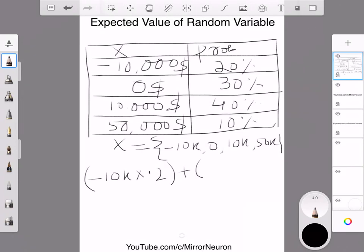Then you plus 0 times 30%, of course, it's 0. Then you have positive 10k times 0.4. 0.4 is 40% chance that you will make $10,000 profit.